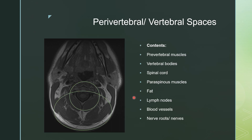In the perivertebral and vertebral spaces, you're including the prevertebral musculature — in this case the longus colli. You have the vertebral body, the whole spinal canal including its contents, the paraspinous musculature, a variable amount of fat, blood vessels, and nerves running through it. You have nerves coming out of the neural foramina as nerve roots going into their ventral and dorsal positioning. When you have a mass in this area, you can get rhabdomyosarcoma of the muscle, metastatic disease to the muscle — things like renal cell and melanoma like to do that — or lesions within the spinal canal or within the cord itself.